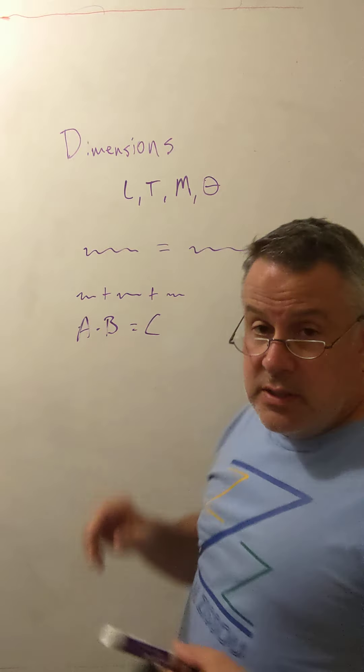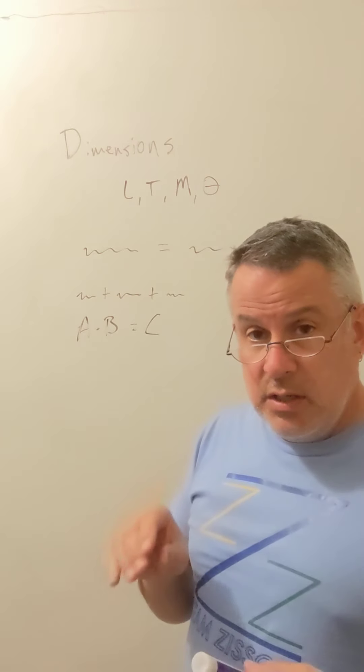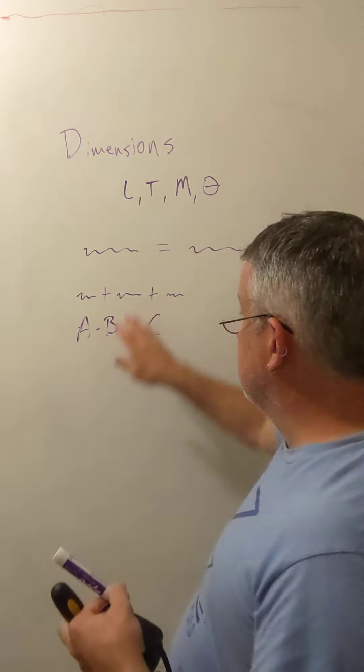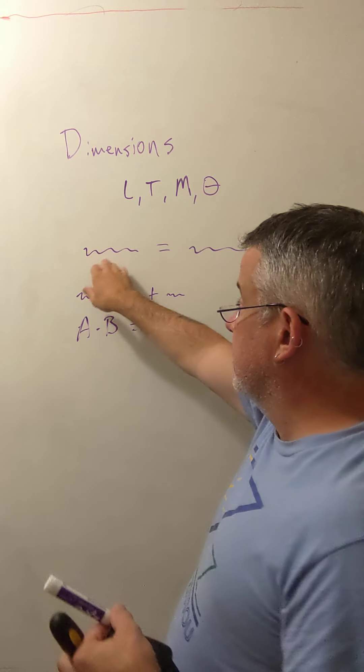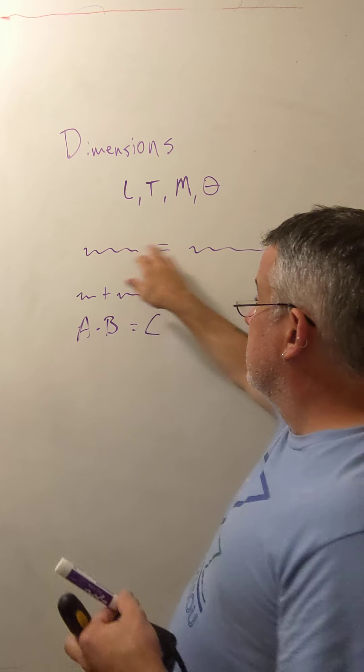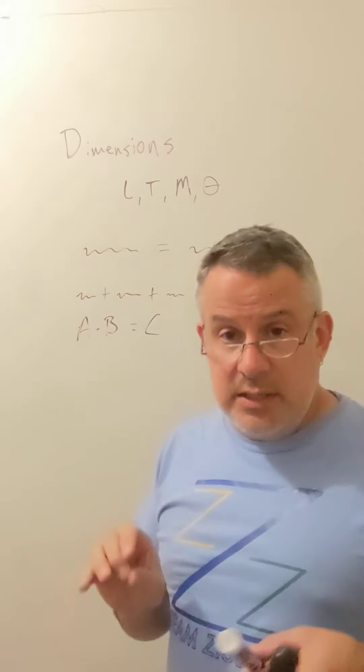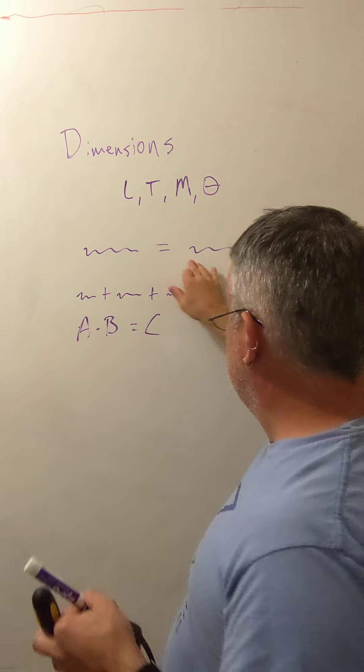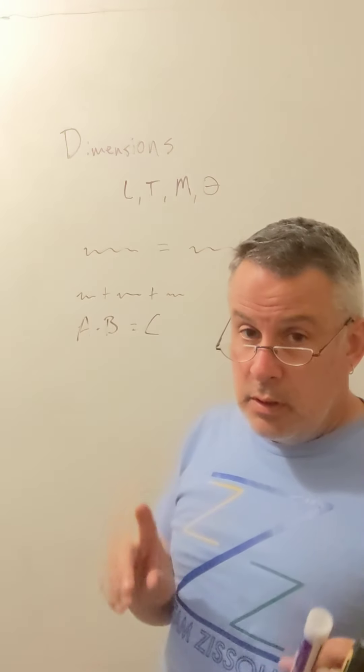One of the things that you think about with dimensions is that two objects should be dimensionally consistent. So if I have an equation with something over here equals something over here, the dimensions on both sides need to be consistent. So if this side is a length, this side is also a length.